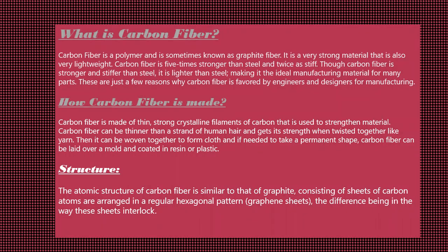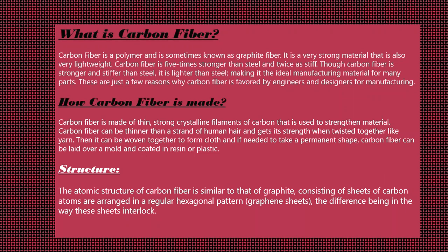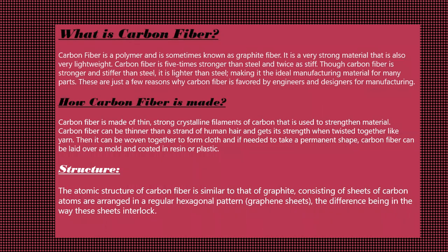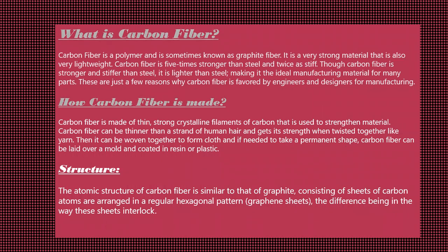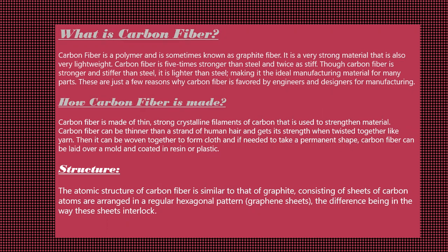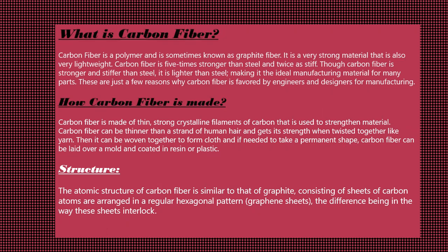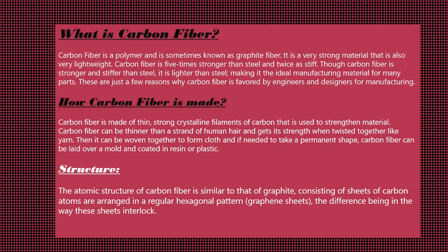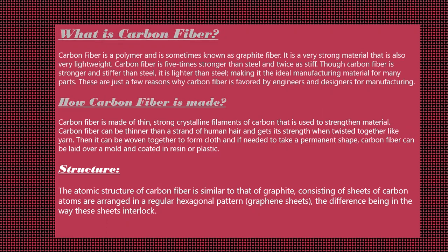Firstly, I will tell you about what is carbon fiber. Carbon fiber, also known as graphite fiber, consists of very thin strands of the element carbon. These fibers have high tensile strength and are extremely strong for their size. In fact, one form of carbon fiber — the carbon nanotube — is considered the strongest material available.